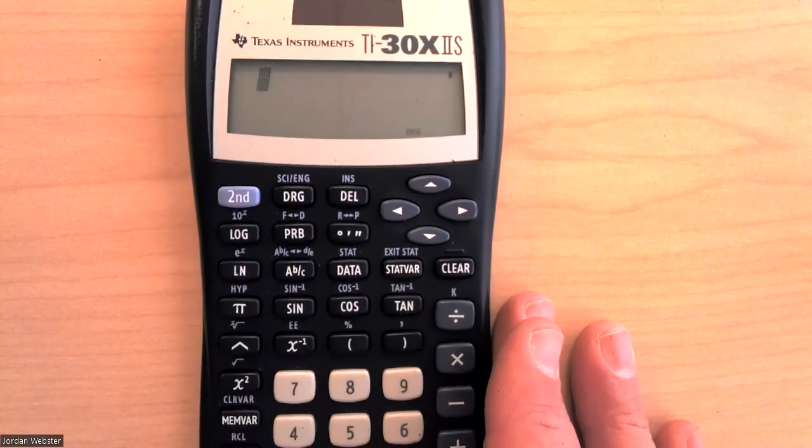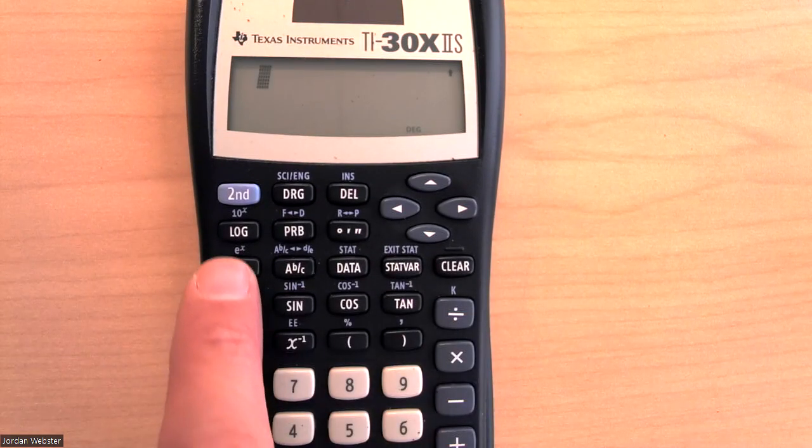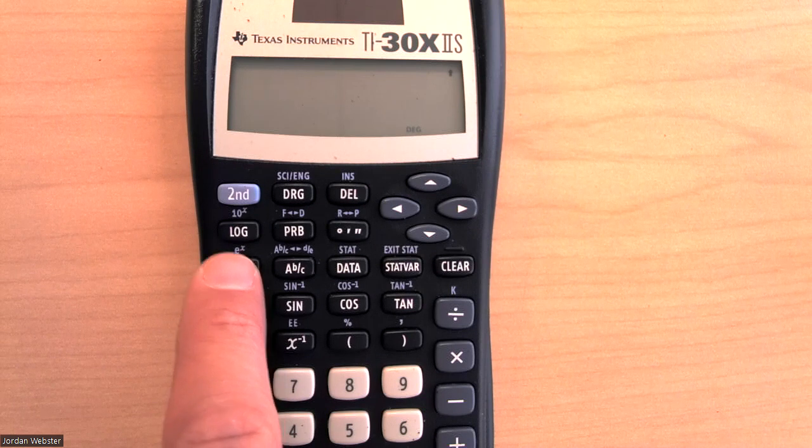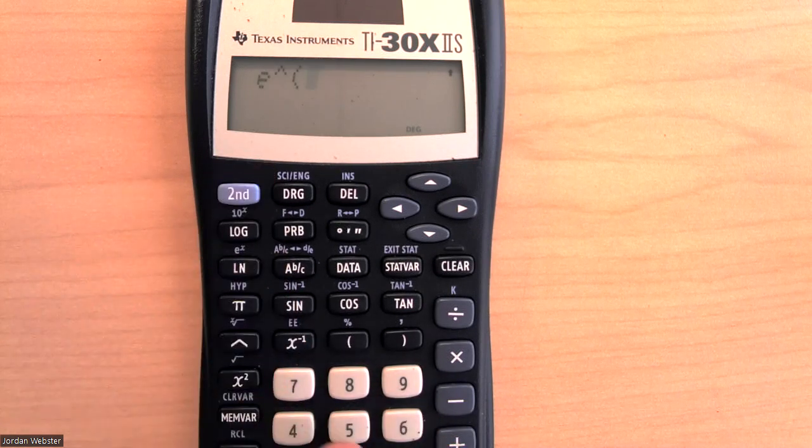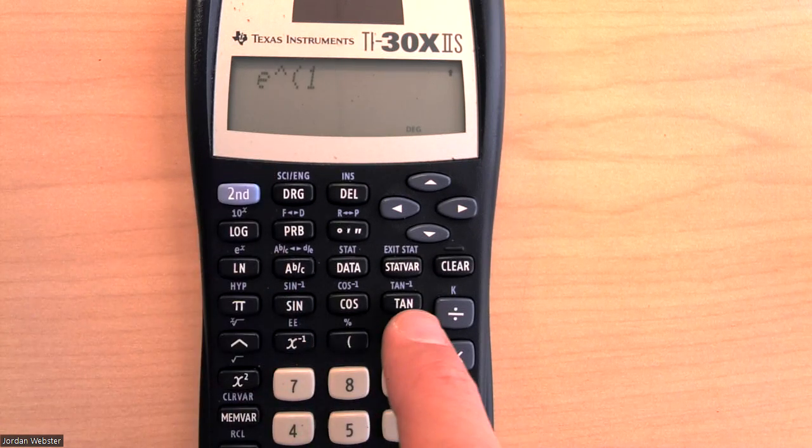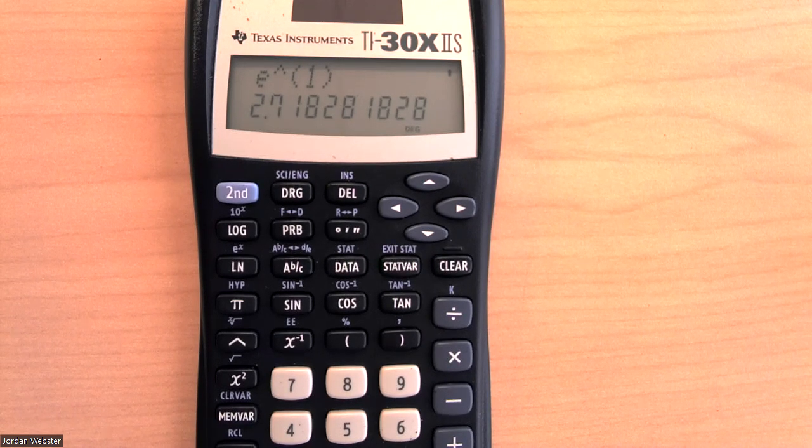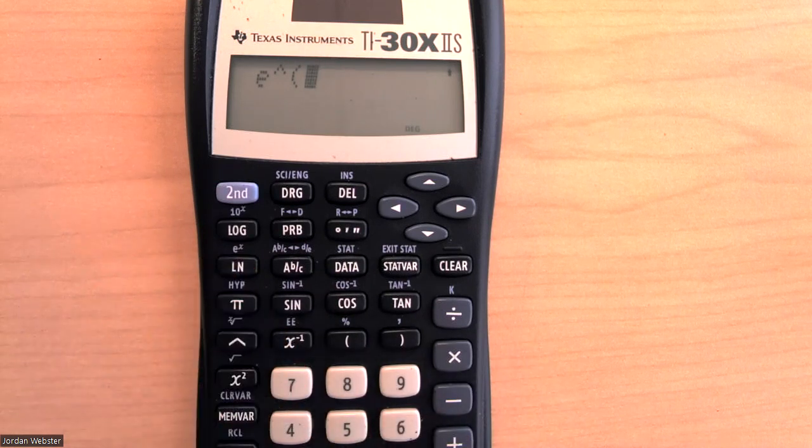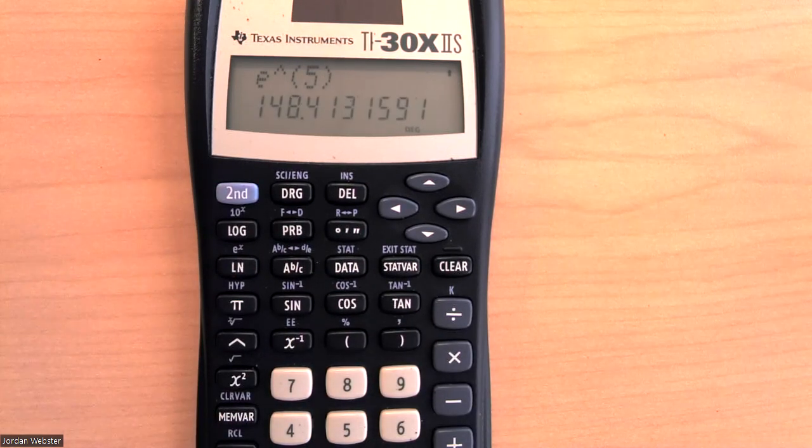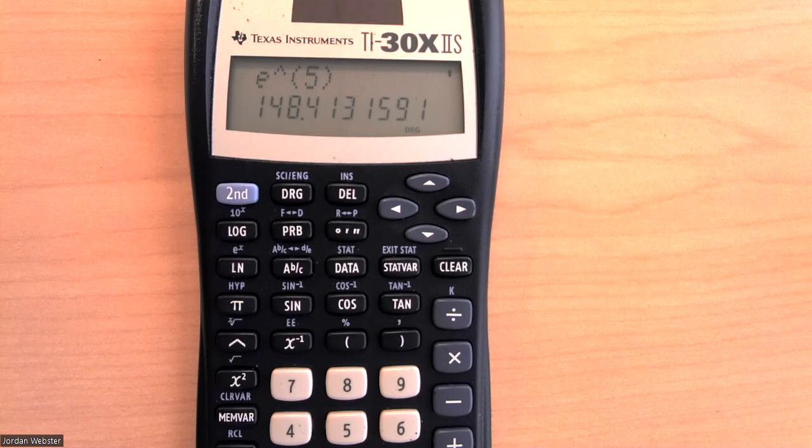So, on the TI-30, the E is right here. So, if I wanted to do E by itself, let's say to the first power, you get that 2.71828. If you want to do E to any other power, you do E to any other power, like E to the fifth would be about that.